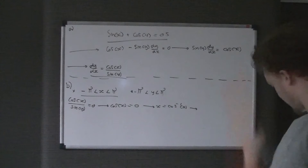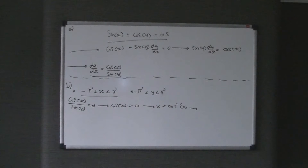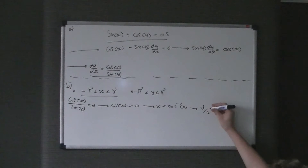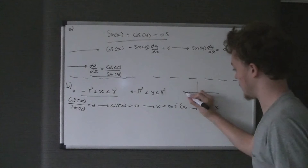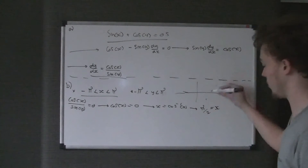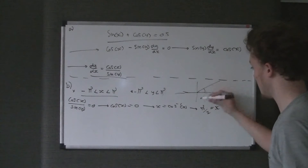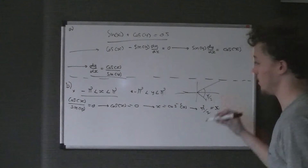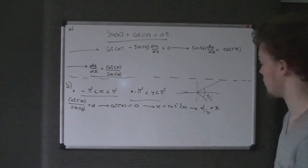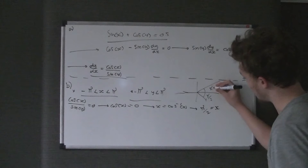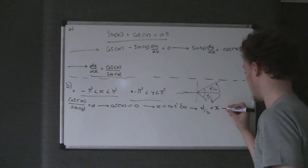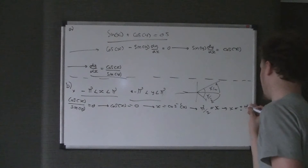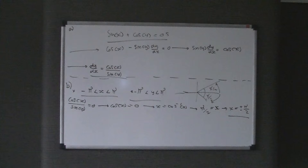Doing cos inverse of zero gives x equals pi over two. Now we draw a CAST diagram. We want where cosine is positive — that's in the 'All' and 'Cos' quadrants. The angle is pi over two. Since we can go positive or negative but not past halfway, x is either positive or negative pi over two. So we get two values for x.